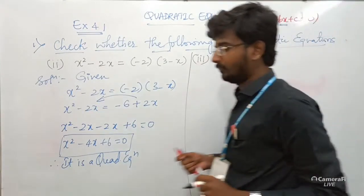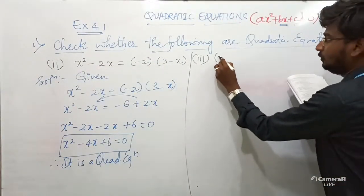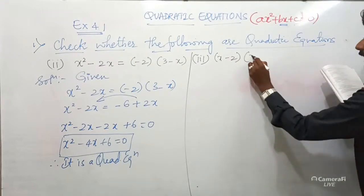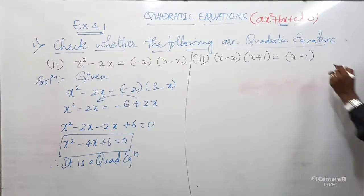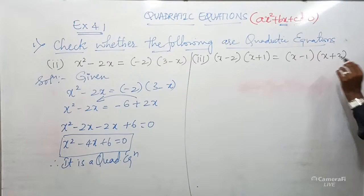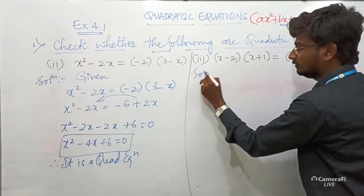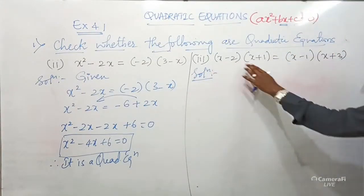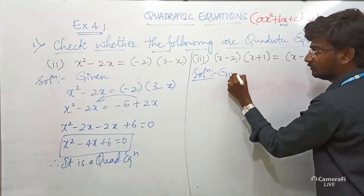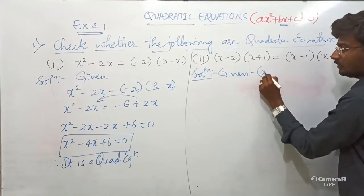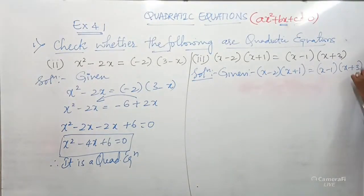Now let us go to problem number 3. The problem is: (X − 2)(X + 1) = (X − 1)(X + 3). Using the same procedure, write given as usual, then multiply the bracket terms.